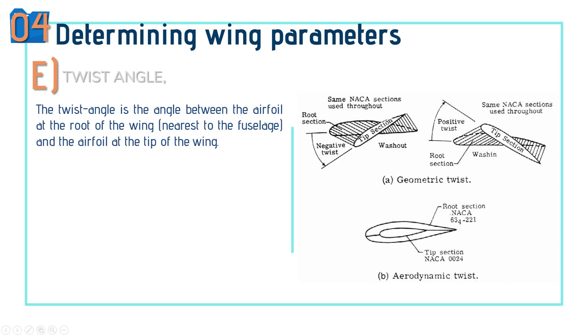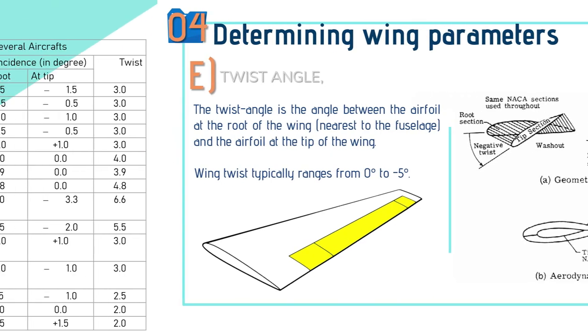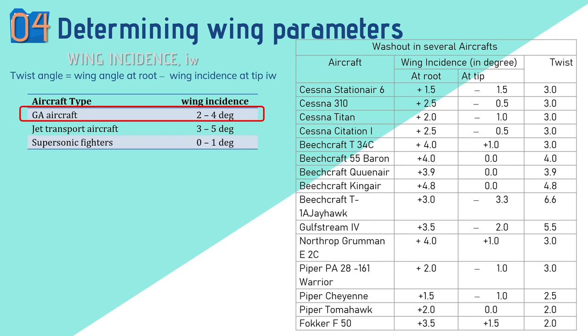Wash-in is when the root airfoil is at zero degrees and the tip section is at a positive angle of attack. In aerodynamic twist, the root and tip sections use different airfoil profiles — for example, root section NACA 363-421 with 21% thickness and tip section NACA 0024 with 24% thickness. The difference in airfoils creates an automatic twist known as aerodynamic twist, leading to wing incidence. The twist angle equals the wing angle at the tip minus the wing incidence at the root. For this design, a 2-degree angle of incidence is chosen.